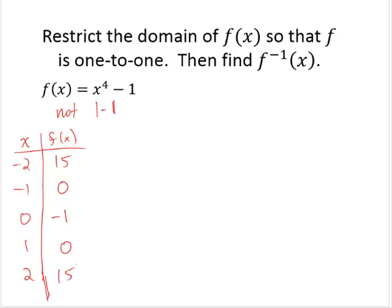So we can see right there that it's not one-to-one. If we were to draw a rough sketch of this function, let's see, we'd have 0, negative 1. We would have negative 1, 0, and 1, 0.